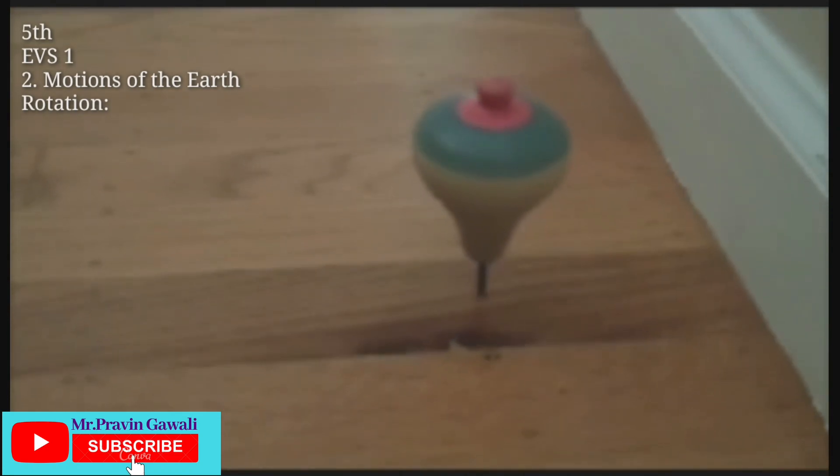When a top or any object rotates itself, that is known as rotation. When an object rotates around itself, it means that it turns around a certain imaginary line.